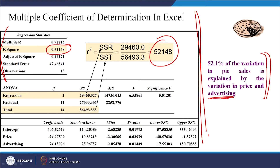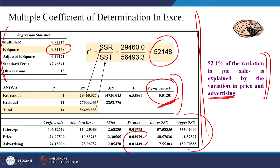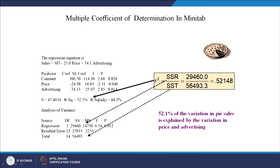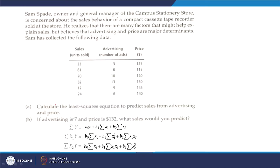This output table has three parts: the first part, the ANOVA table, and the third part. The p-value of F tells you whether the overall model is significant. The p-values of individual independent variables show that both are significant, and these two independent variables explain 52.1% of the variation in the dependent variable. The MINITAB output gives the same information — R-squared, p-value, and standard error of 47.46.